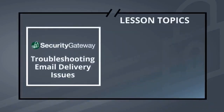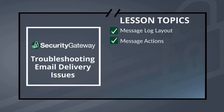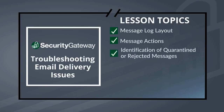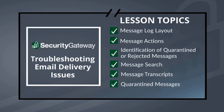This lesson covers the following topics: the layout of the message log; actions that can be performed on messages such as search, re-deliver, marking messages spam or non-spam, or whitelisting or blacklisting the sender; how to easily identify quarantined or rejected messages; the message search feature; message transcripts; quarantined messages, including user quarantines as well as the administrative quarantine; message queues, including messages queued for delivery; and the bad messages queue, which will contain messages that could not be delivered.